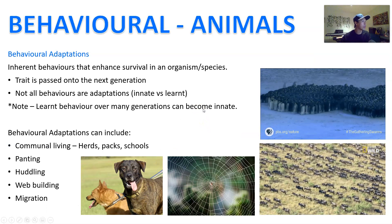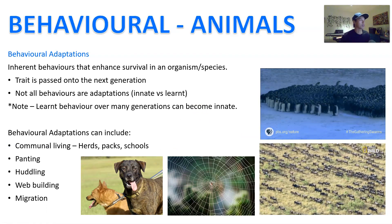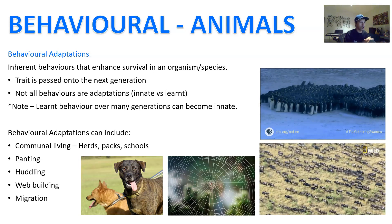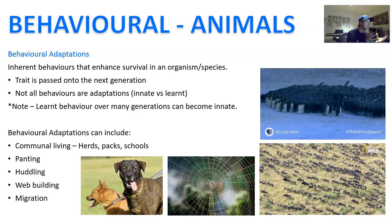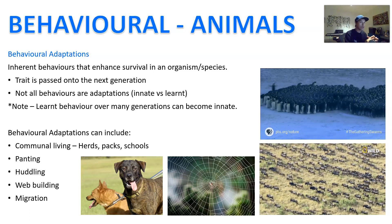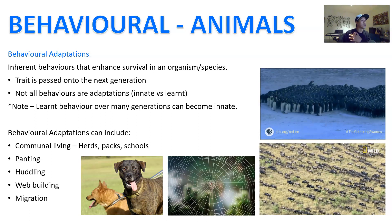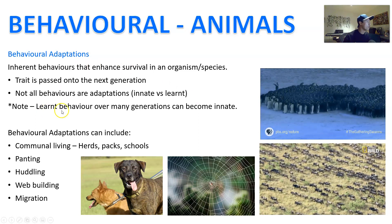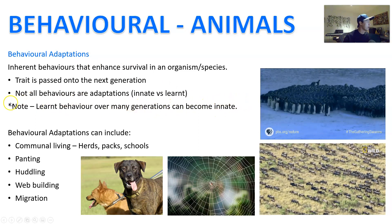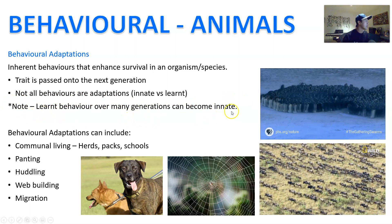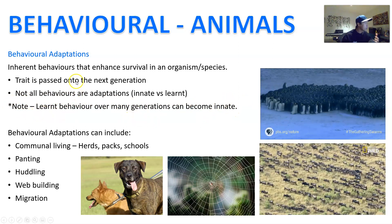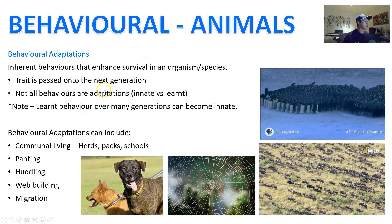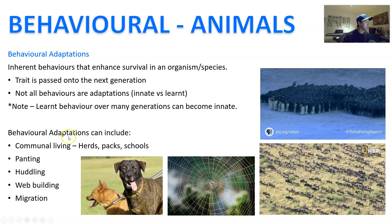Now, adaptations that involve behavior. Behavior can also be an adaptation. When behavior is learned it can sometimes be lost within the organism and isn't considered really as an adaptation. However, if the behavior can be passed onto the offspring, we would consider that as an adaptation. It's a bit of a blurred line because learned behavior over many generations can actually become innate over time — that's kind of how it starts to become part of your genes. So behavioral adaptations are inherent behaviors that enhance survival and are passed on to the next generation.